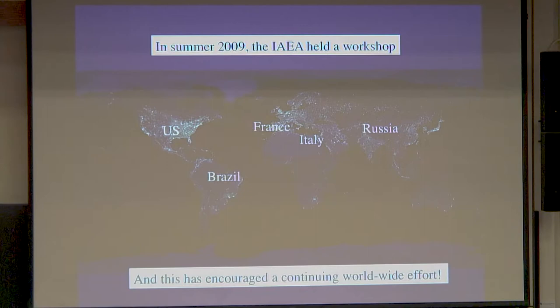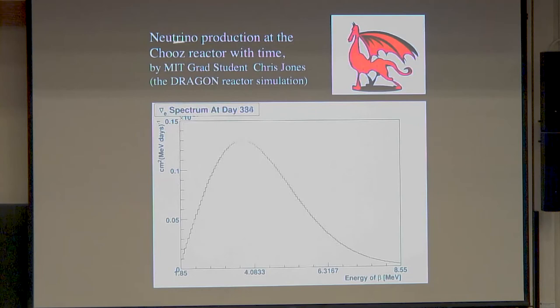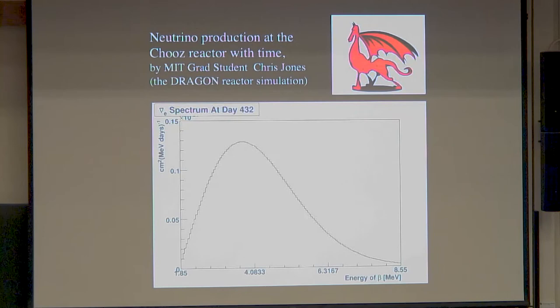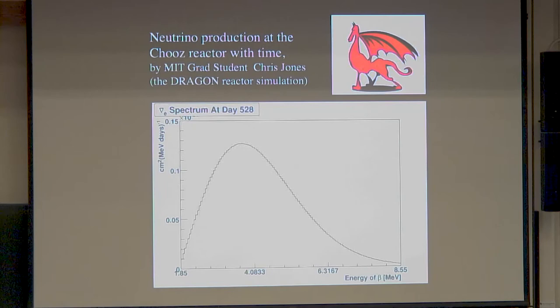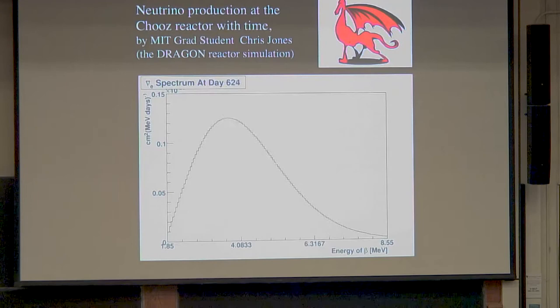Here is how it works: this is a simulation by MIT graduate student Chris Jones of the flux coming from a reactor — you're looking at the spectrum of a reactor burn with time. Notice that this part over here is changing at a different rate than this part: this part is going down much more quickly. This part is coming from the plutonium, and this part is coming from the uranium. You can really look at this flux and see the change with time that tells you about the plutonium being produced.